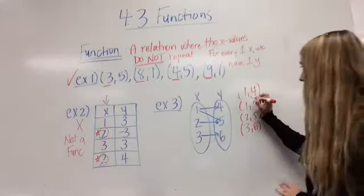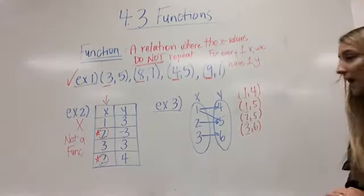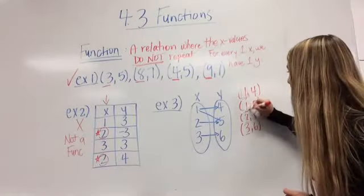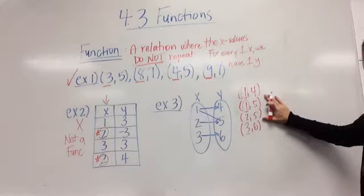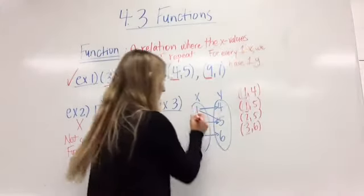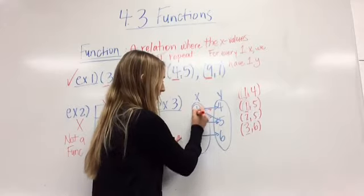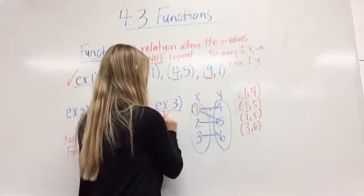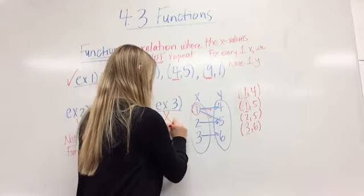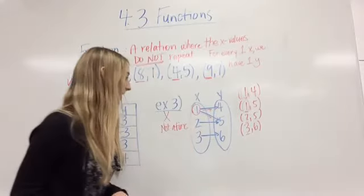Okay, again, x value, it's the first point, the first number in an ordered pair. I have 2 1's here. So you didn't have to write this ordered pair because you can see it from our mapping. This 1 is going to the 5 and the 4. So that 1 makes it not a function. Okay, so example number 3 is not a function because of that 3.